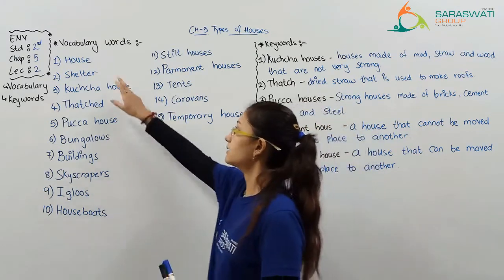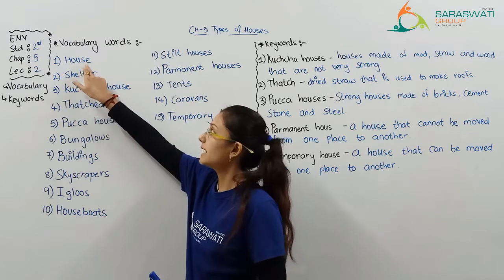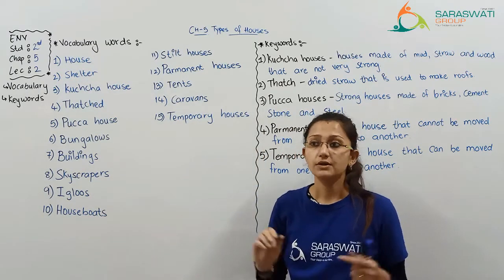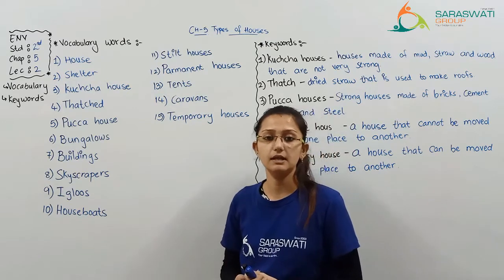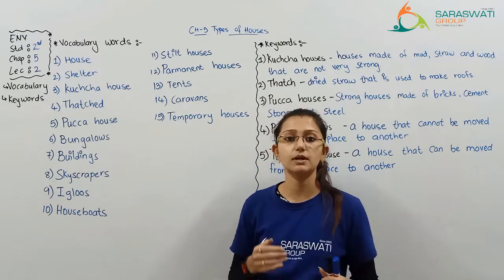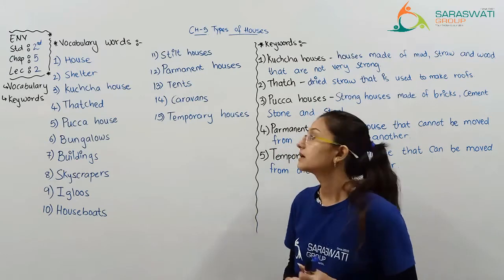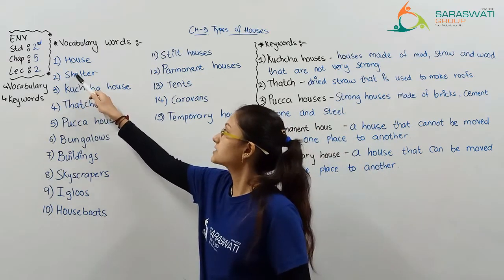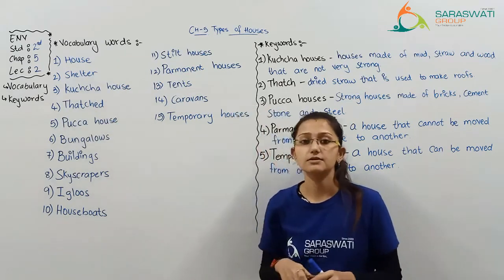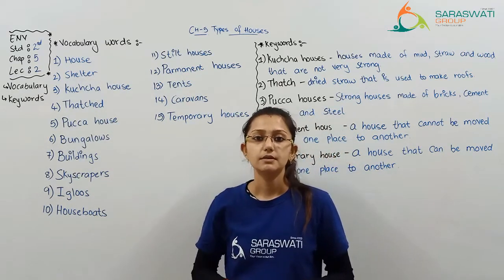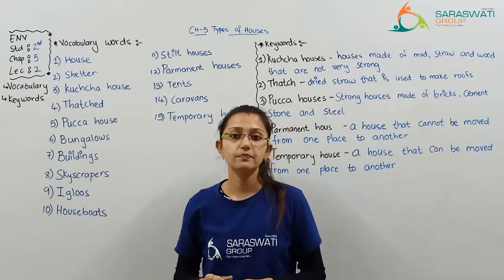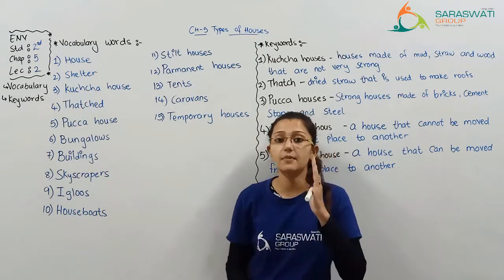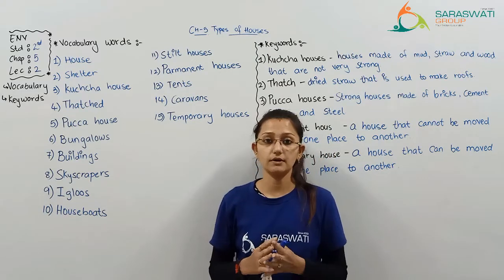First of all: house. H-O-U-S-E. House. What do you mean by house? The place we are living in — that is known as house. Second one: shelter. S-H-E-L-T-E-R. Shelter means the place where we feel peace and calm.